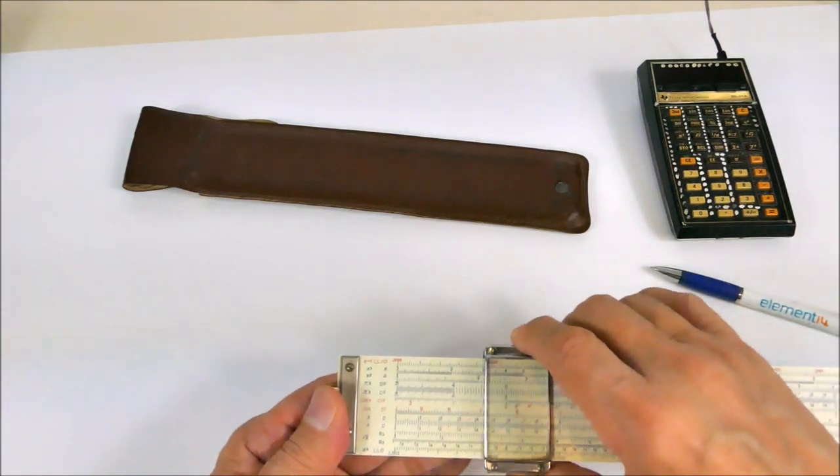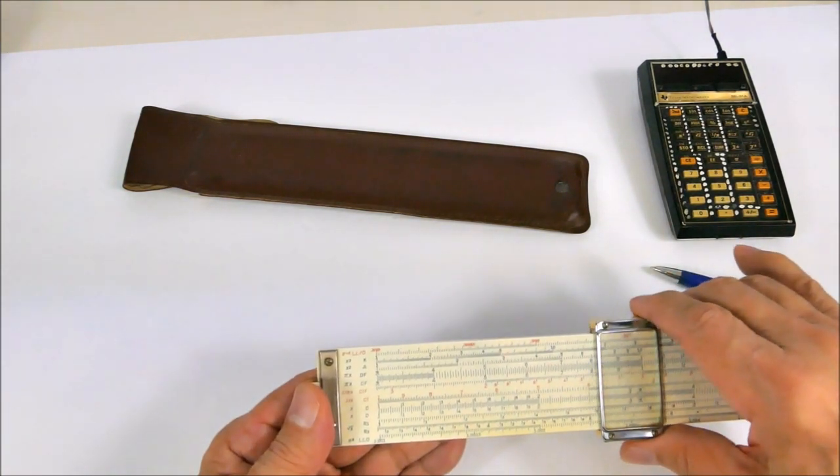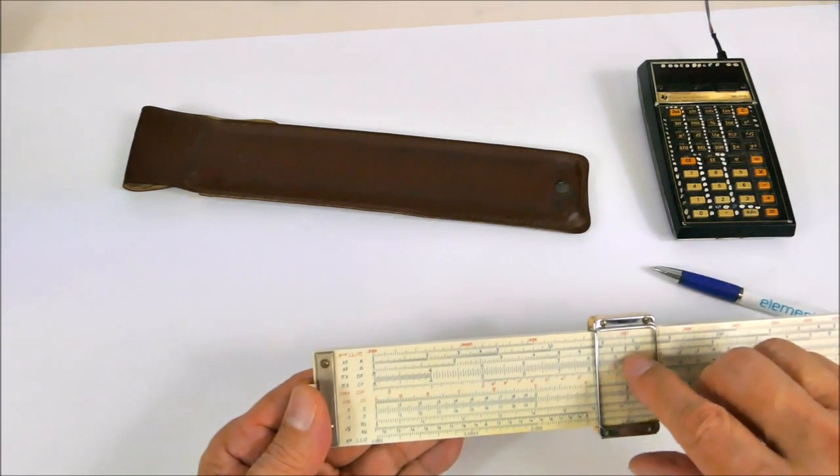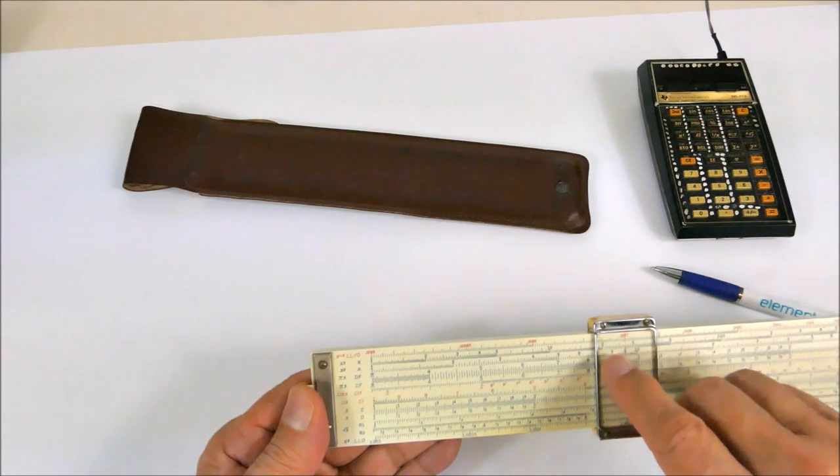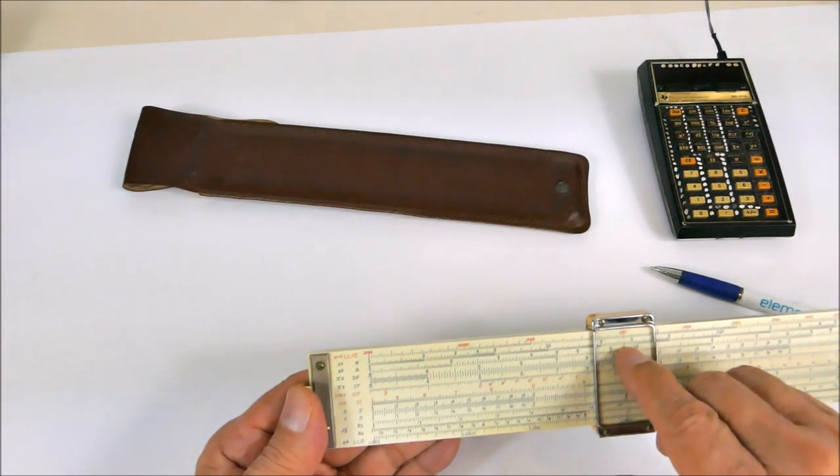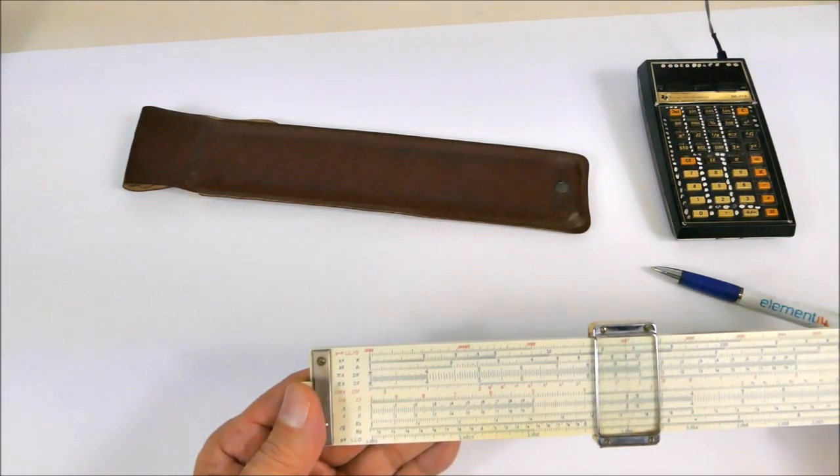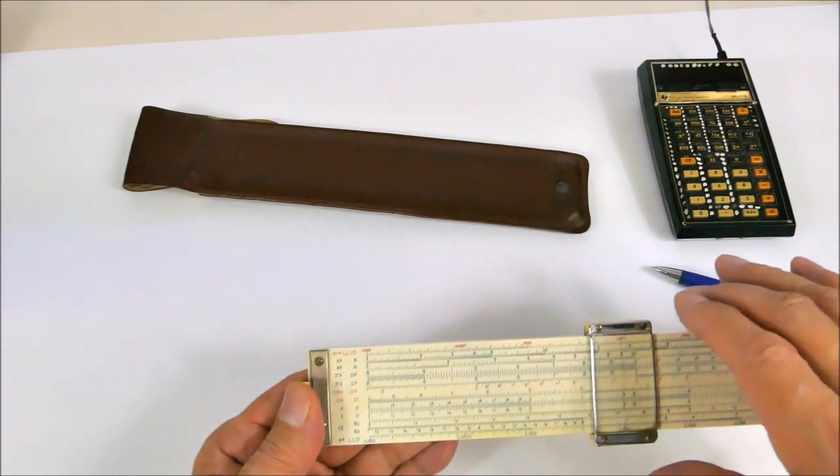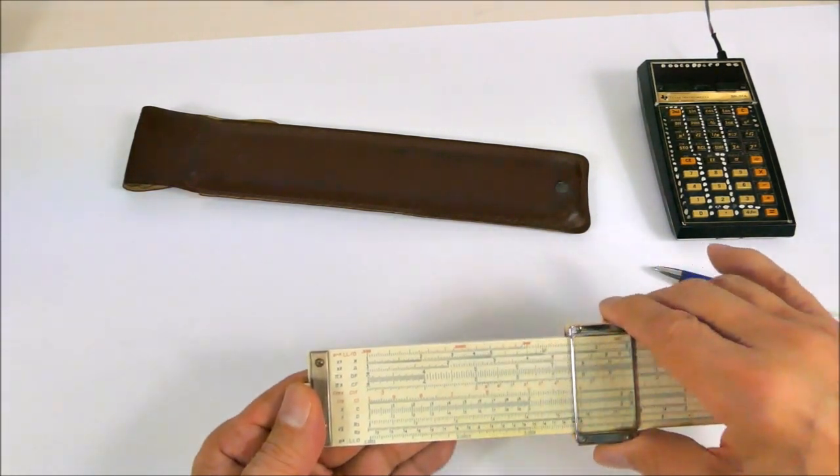Doing something like x squared is very simple. You just move the slider, the cursor, to wherever you want. Suppose we take three, and we take three squared is nine, and three cubed is 27.